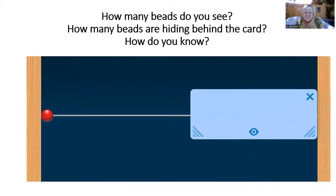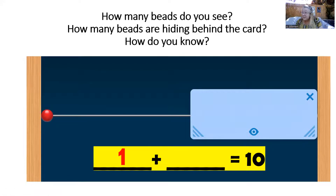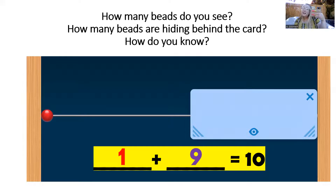Now let's do another one. How many beads do you see this time? Make that on your number rack. There's one bead. So if there's one bead showing, how many beads are hiding behind the card in the picture? Did you make it on your number rack? Yes, there are nine beads hiding behind the card. Let's go ahead and read that equation together: one plus nine equals 10.